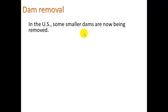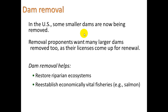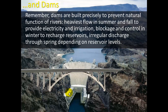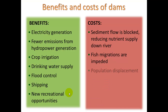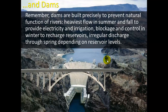Some small dams are being removed, which is great — some are not renewing their licenses. Dam removal basically reverses all those negative effects: it restores riparian ecosystems, allows water to flow naturally, allows vegetation to recover, restores fisheries, and reintroduces recreation such as rafting and fly fishing. One thing to note is that dams impede fish migrations — fish cannot get through, though you can build fish ladders to help them get upstream to lay their eggs.